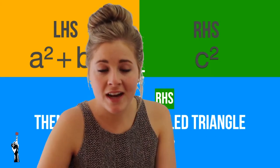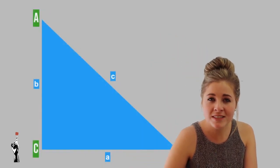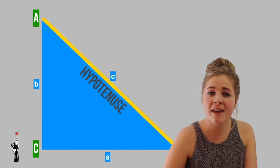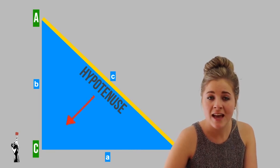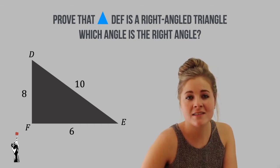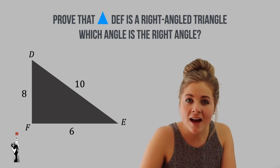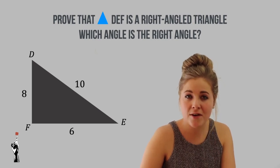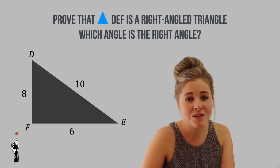Always remember that your 90 degree angle is opposite your hypotenuse, so they tend to ask you which angle would be the 90 degree angle. You find your hypotenuse and know that the angle on the opposite side will be 90 degrees. Now let's do this example together. The question asks us to prove that triangle DEF is a right angled triangle. Remember, I need to prove that the left hand side of Pythagoras' theorem is equal to the right hand side, and I need to do this separately.